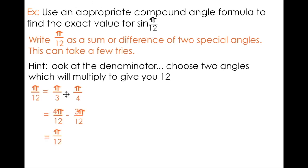It happens. Let's stick with 3 and 4, but this time, let's try subtraction. Sure enough, pi over 3 minus pi over 4 gives me pi over 12.